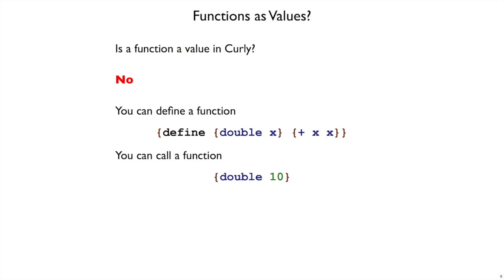That's because, while we can define a function, like the double function here, and we can call a function, a function can't be the result of interp, which means we cannot pass a function to another function, we cannot bind it to a name using let, all we can do is call a function.